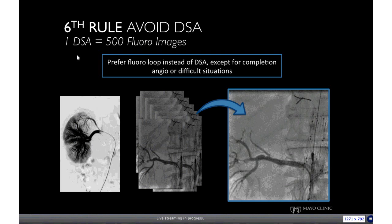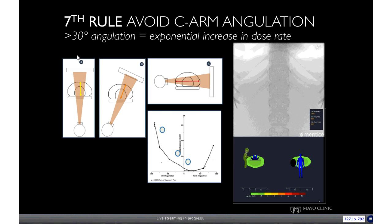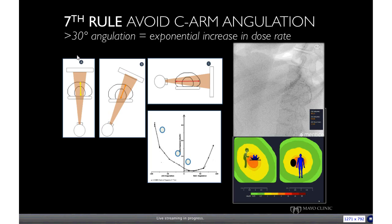The last radiation tip is to avoid working on oblique or lateral views as much as possible. That may be needed, for example, to catheterize an SMA or celiac axis, but as soon as you can change to the AP view, it will greatly reduce radiation exposure.